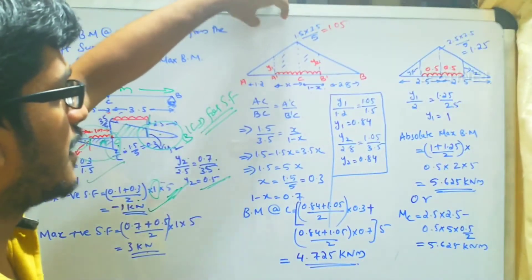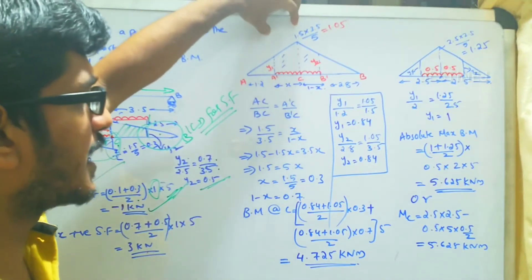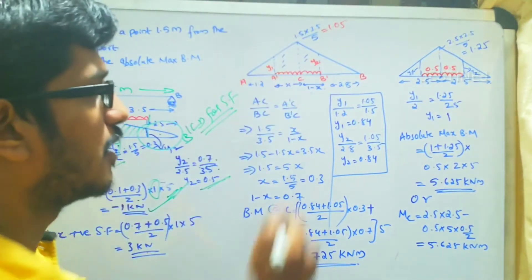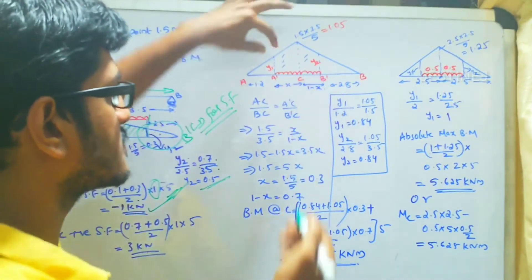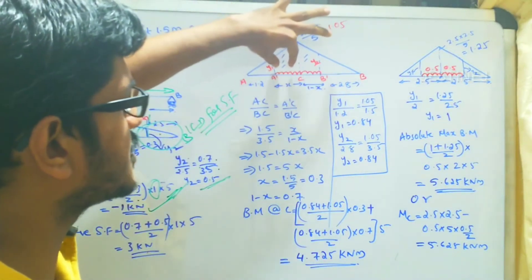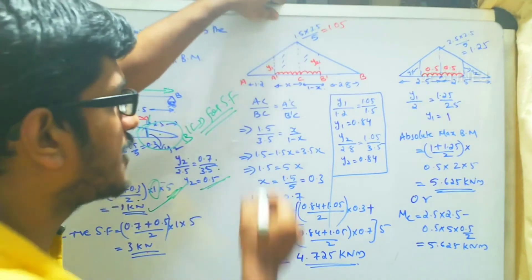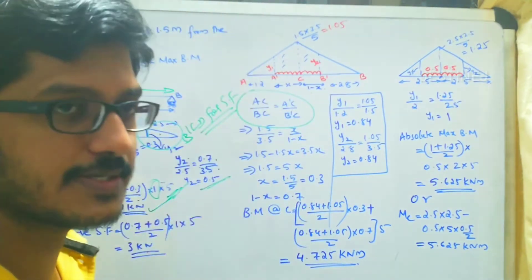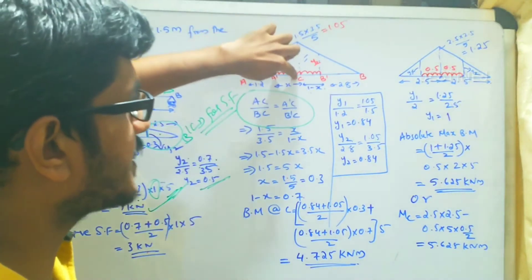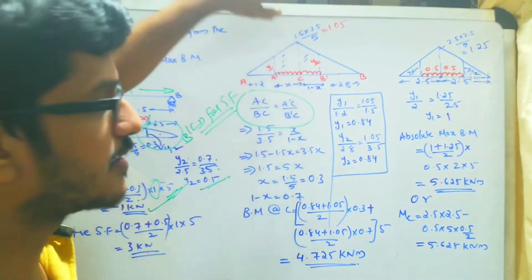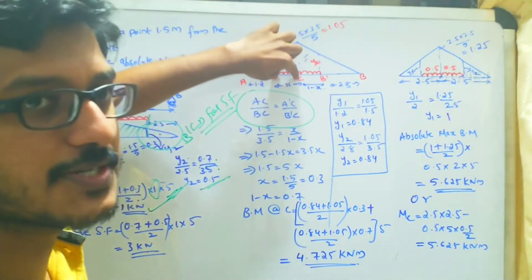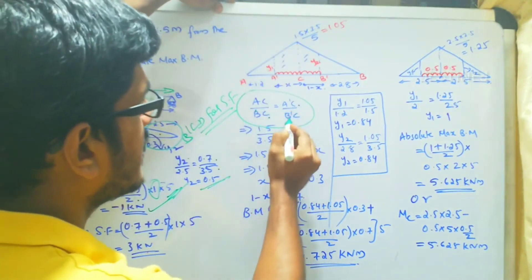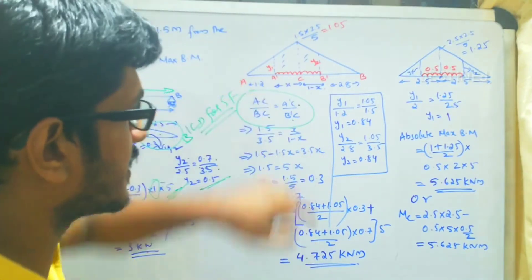For the bending moment diagram, we need to determine where to place this UDL. We apply the concept from the previous lecture: point C divides the beam in the same ratio that the UDL divides at point C, that is AC by BC equals A-dash-C by B-dash-C.